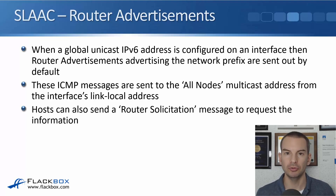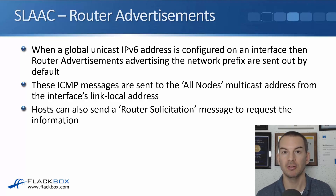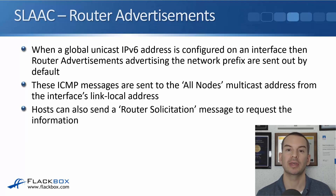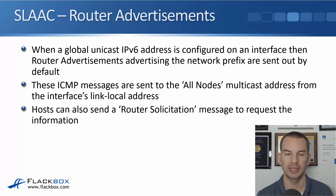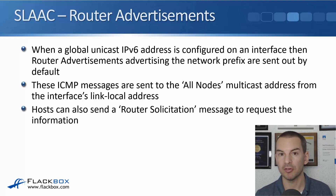When a global unicast IPv6 address is configured on a router interface, router advertisements, which advertise the 64-bit network portion of the address on that interface, are sent out by the router by default. They are sent using ICMP to the all-nodes multicast address, using the interface's link-local address as the source address, so that gets sent out to everybody on the local link. This is how hosts can learn the network portion on that link and use it to generate their full 128-bit IPv6 address.